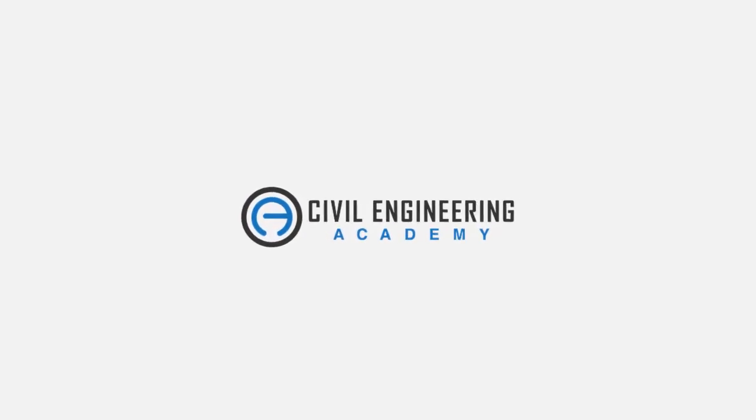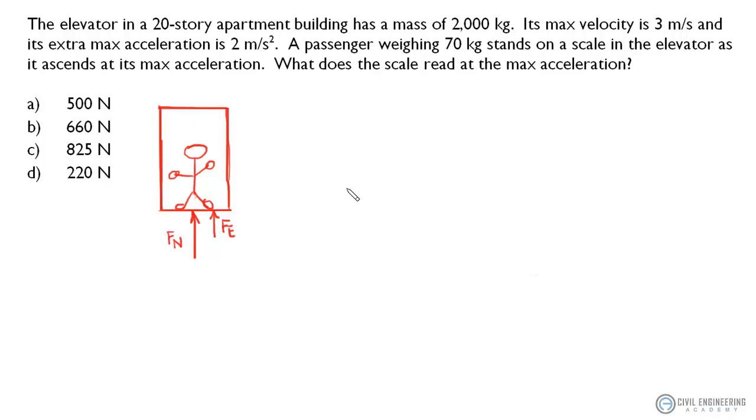Hey there engineers, welcome to Civil Engineering Academy where we're looking at a problem from dynamics, more specifically from kinetics. The problem reads: an elevator in a 20-story apartment building has a mass of 2,000 kilograms, its max velocity is 3 meters per second, and its extra max acceleration is 2 meters per second squared.